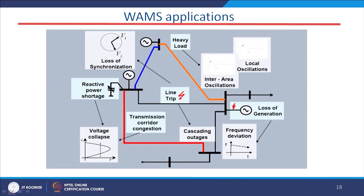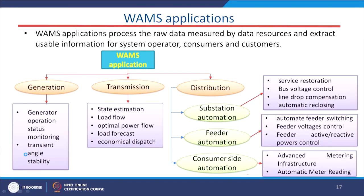Looking at this slide, different sectors are mentioned. For generation, we can go for generator operation status and monitoring. In a particular generating station, we have a large number of generating power plants, and we have to monitor the corresponding voltage, frequency, current, and power output. There are many parameters which require a monitoring system to check their status, and for that purpose we can use the WORMS application — the wide area data monitoring system. The second application is transient angle stability.